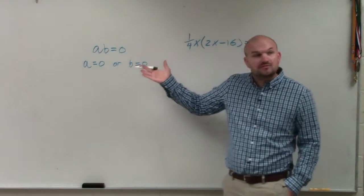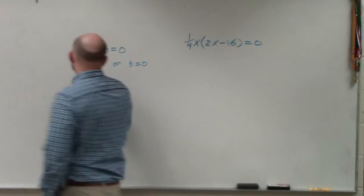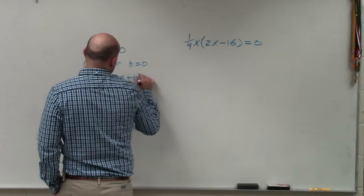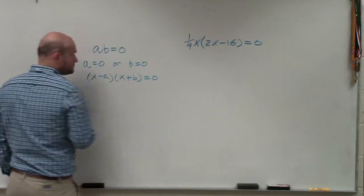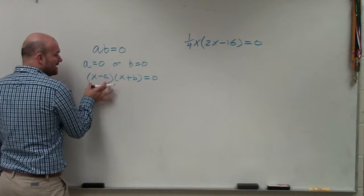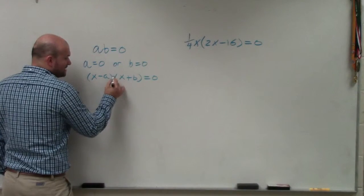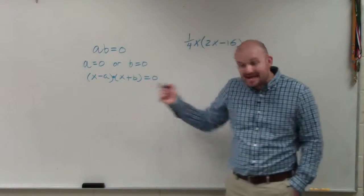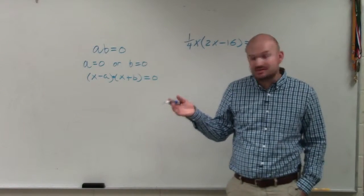Now, it doesn't matter if it's two values or even if it's two expressions. x minus a times x plus b equals zero. Even if you have this, we know that since there's the product of those two expressions, one of them has to be equal to zero.